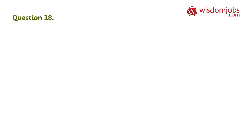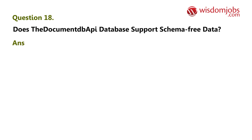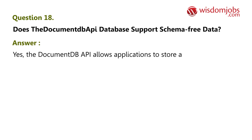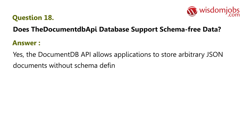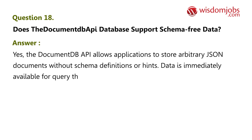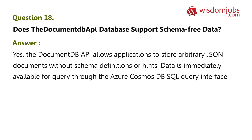Question 18: Does the Document DB API database support schema-free data? Answer: Yes. The Document DB API allows applications to store arbitrary JSON documents without schema definitions or hints. Data is immediately available for query through the Azure Cosmos DB SQL query interface.